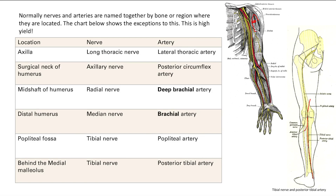The way to remember the deep brachial artery is that the radial nerve also goes deep — we keep drawing that dashed line of the radial nerve because it's going deep, it's under the biceps. So that artery is also deep; it's called the deep brachial artery.